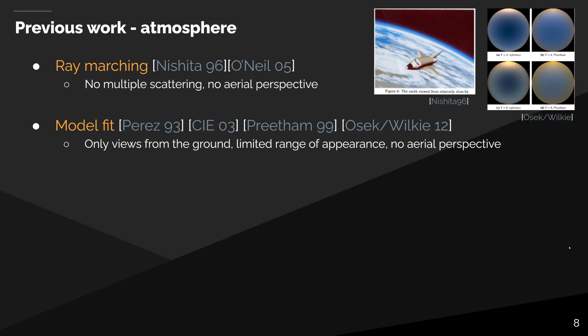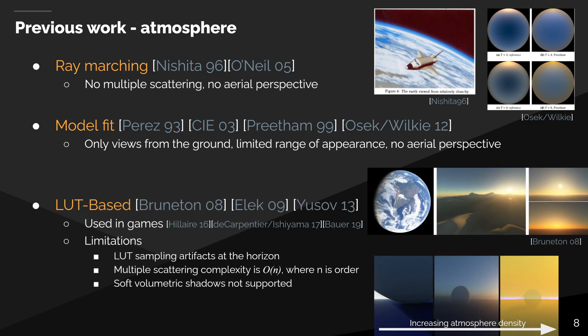So let's start with sky rendering. Several methods have been proposed — for instance, it is possible to reparametrize the atmosphere or fit a mathematical model on the sky color itself. However, such models do not take into account multiple scattering, do not provide solutions to render the aerial perspective on objects, and do not support views from space. A more successful approach are the lookup table based models, used in many games with some simplifications. However, they have limitations: visual artifacts can appear at the horizon for thick atmospheres, the high-dimensional scattering LUT is expensive to update and requires N iterations for N orders of scattering, and volumetric shadows from clouds are not directly supported.